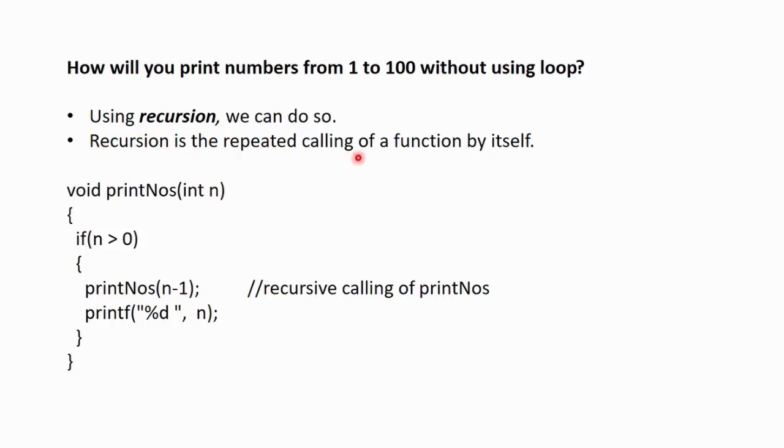Recursion is the repeated calling of a function by itself. Here we have created a function whose return type is void. The name of the function is printNos and it accepts an integer argument n. Within the body of the function, there is an if statement. If n is greater than 0, then it calls itself. It calls printNos and passes n-1 into it. After that calling, it will print the value of n. This printNos function calls itself and using that, it will print the value of n and n will be supplied by the user. It is a recursive calling of printNos and using this, we can print easily the numbers from 1 to 100 without using any loop.